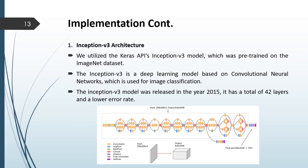As the first architecture, Inception-V3: we utilized the Keras API's Inception-V3 model, which was pre-trained on the ImageNet dataset. Inception-V3 is a deep learning model based on convolutional neural networks used for image classification. The Inception-V3 model has a total of 42 layers and achieves a lower error rate.